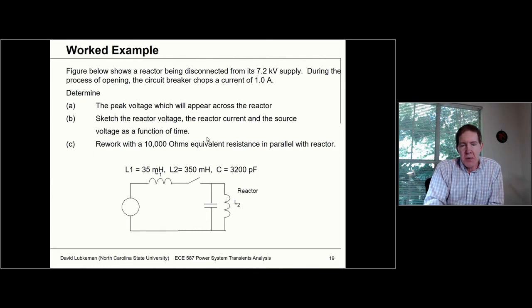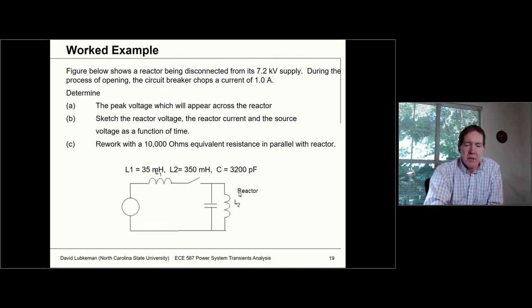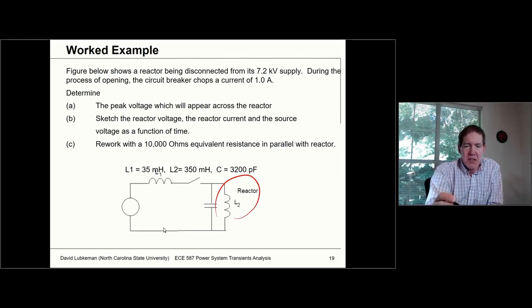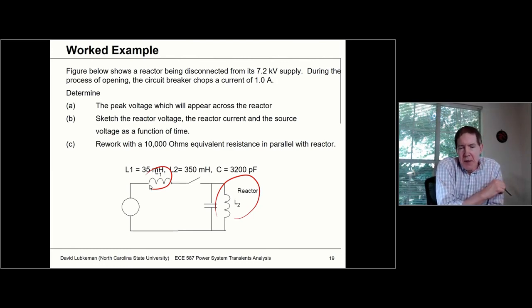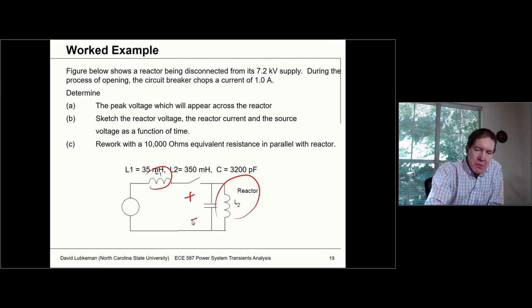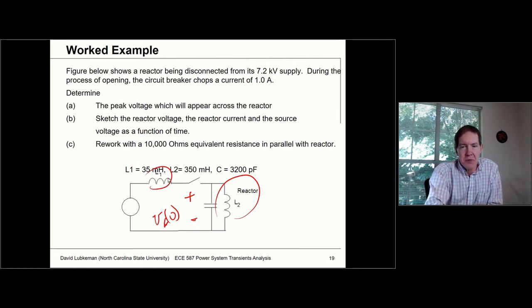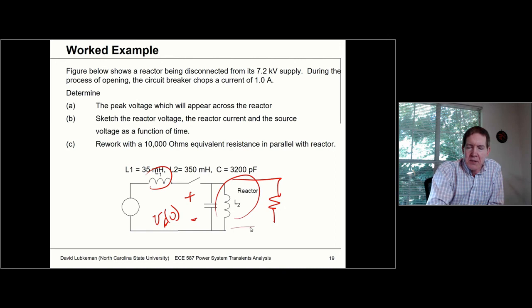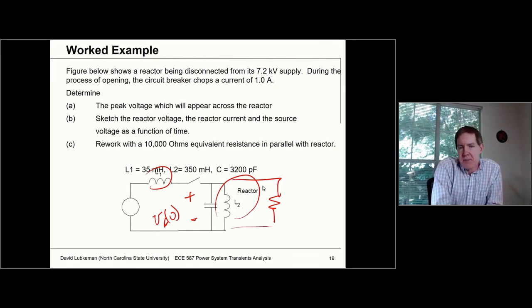In the next video I've got a worked example. To make it a little more complicated, I've got a reactance in the circuit which may or may not correspond to a transformer, and also another inductance L₁ as a significant source inductance. We'll go through more work to see the implications for the initial capacitor voltage, and then we'll also assume we add 10,000 ohm resistance in parallel with that reactance and see what difference that makes in the solution.